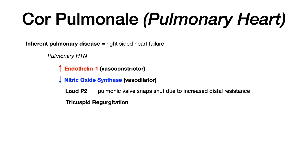Cor pulmonale quite literally translates to 'pulmonary heart,' and this is when there is an inherent pulmonary disease — like severe COPD — which causes pulmonary hypertension, which can lead to heart failure secondary to that pulmonary issue. On your exam, if you have cor pulmonale, you're going to see right-sided heart failure and pulmonary hypertension. A couple of high-yield things to know: in pulmonary hypertension, you're going to have increased endothelin-1, which is a vasoconstrictor, and decreased nitric oxide synthase, which is a vasodilator — increased vasoconstrictors and decreased vasodilators.